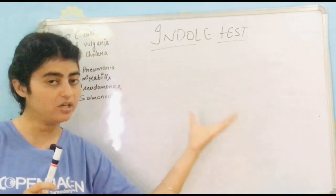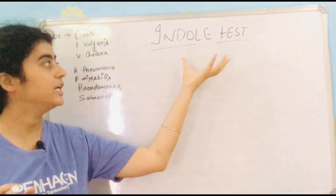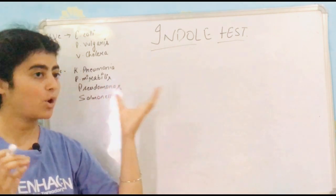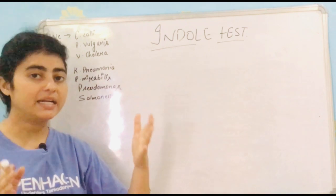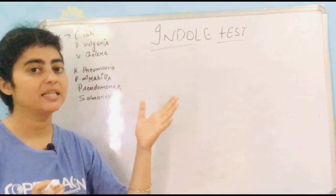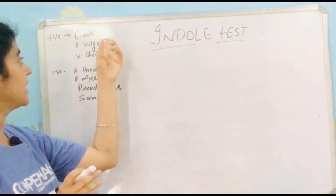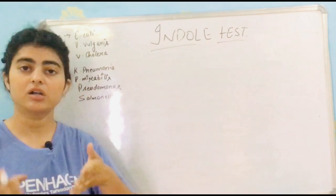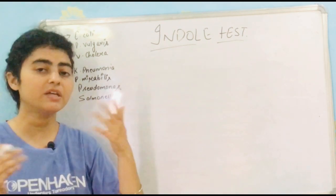At the end of the reaction, if the indole test result is positive, it means that the colony you have in your petri plate may consist of either E. coli, Proteus vulgaris, or Vibrio cholerae.